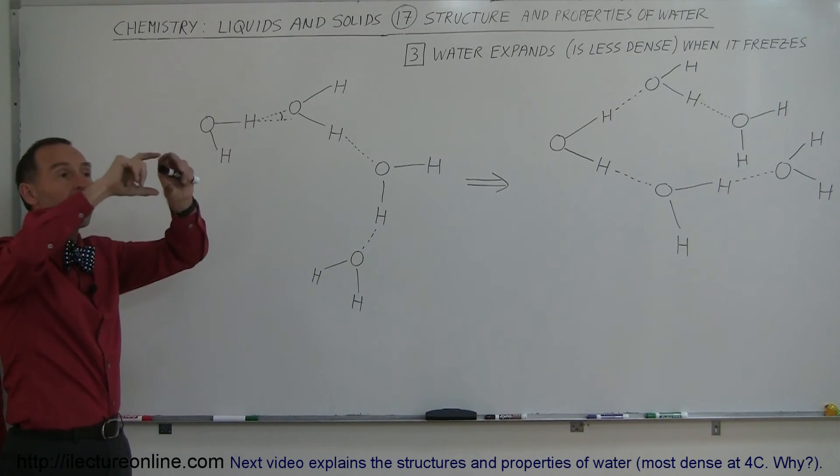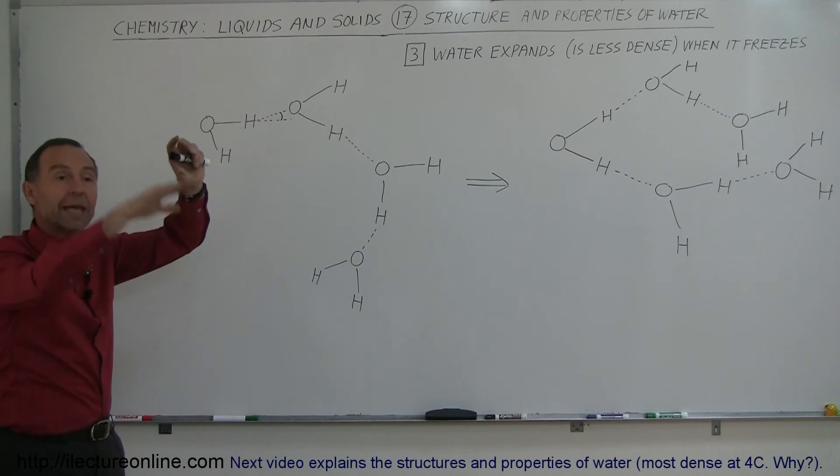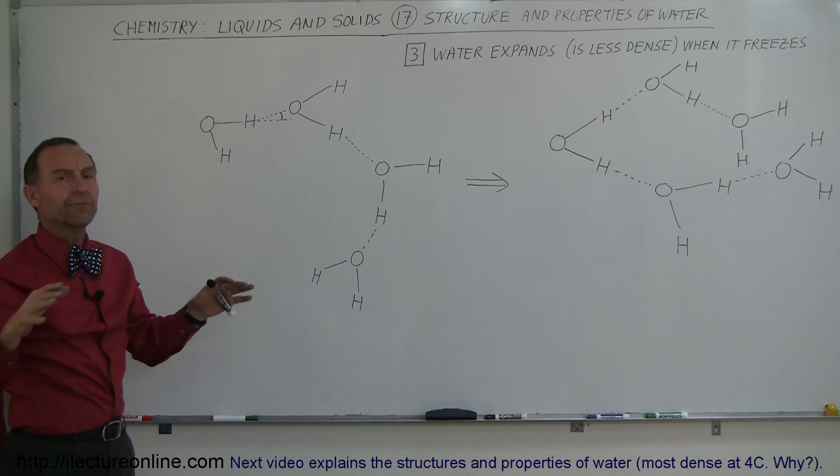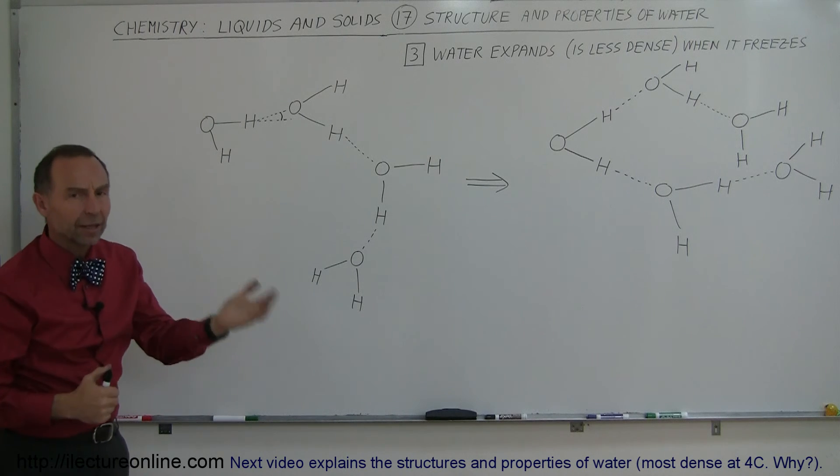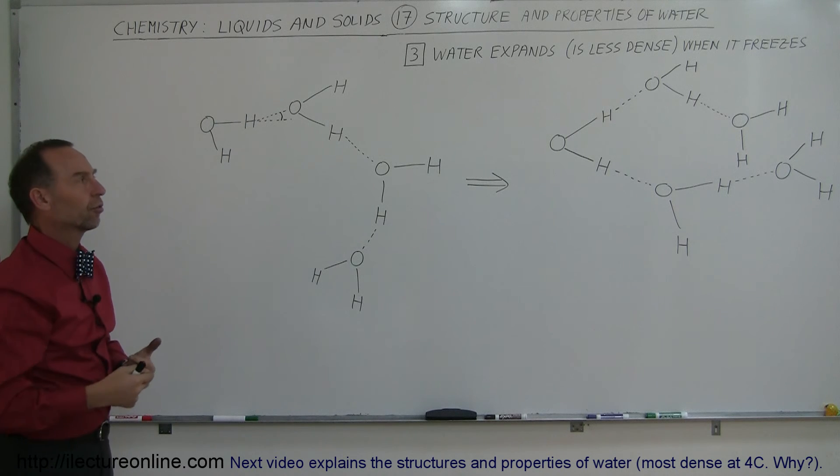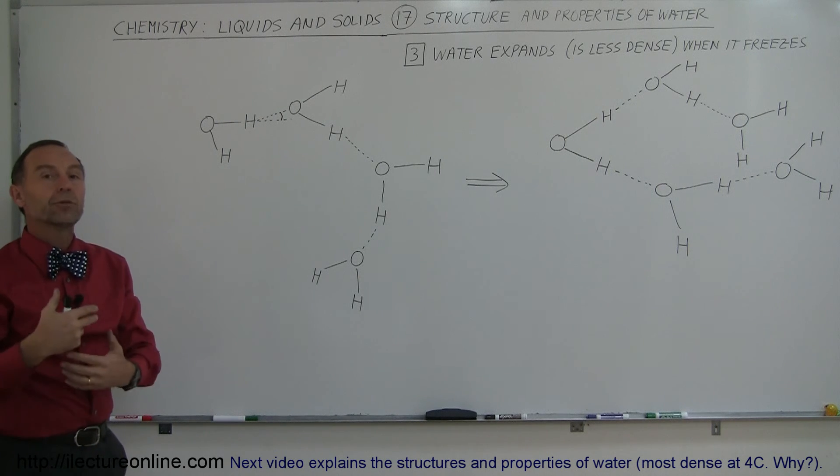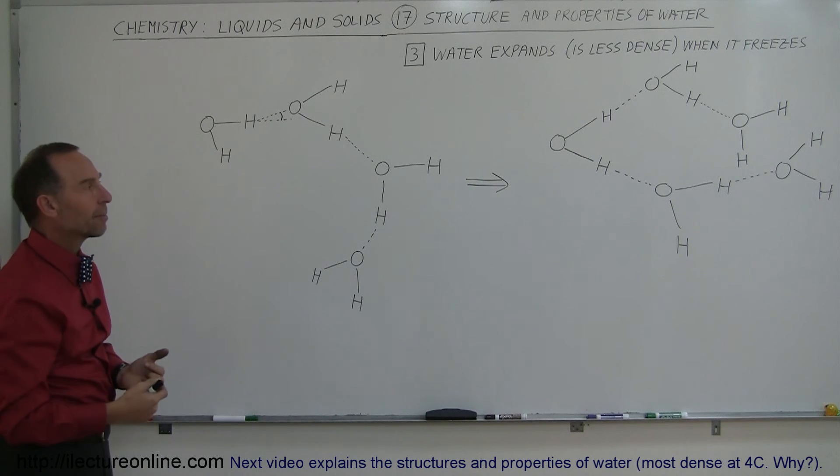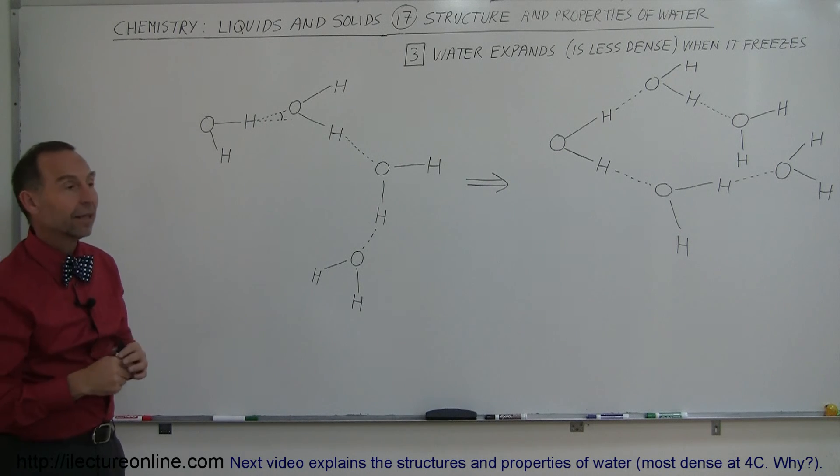And in the summertime, only the top layer would melt, and ice would remain everywhere else. And so large portions of the oceans around the world would be completely big blocks of ice. A lot of the lakes would be complete big blocks of ice, and life would be very difficult under such circumstances. Water would not be able to retain its heat, do its moderation effect on the climate, and life would be very, very different, much more difficult for us to live in an environment like that.